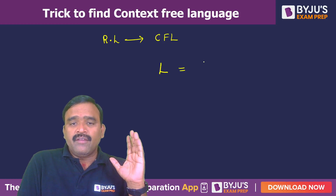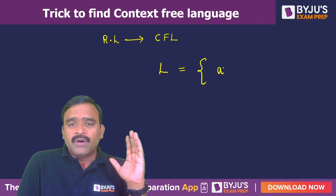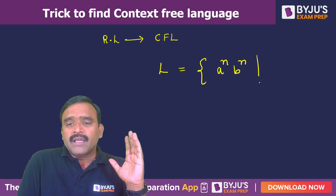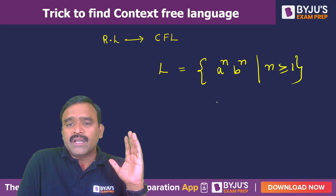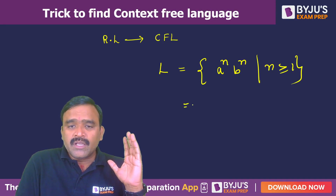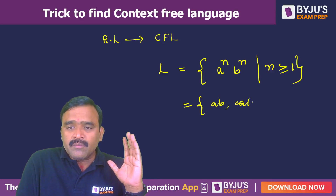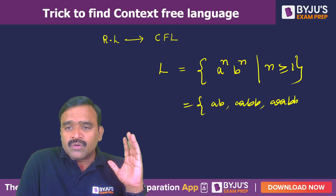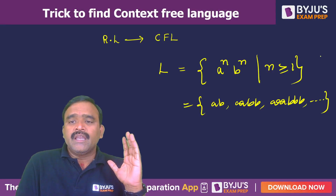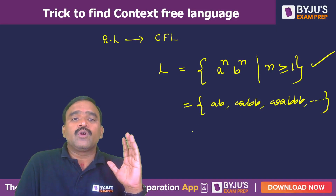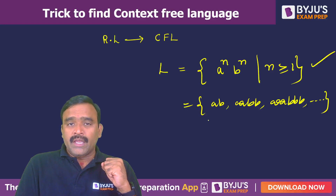For example, if L equals a^n b^n such that n is greater than or equal to 1, the possible strings are: 'ab', 'aabb', 'aaab', and so on — n number of a's followed by the same number of b's.